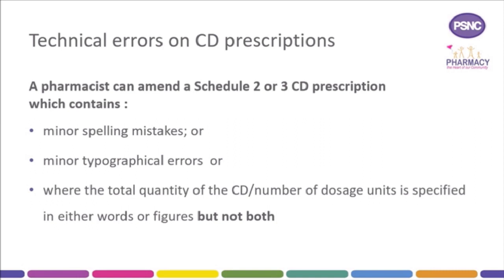If a Schedule 2 or 3 CD prescription issued by EPS does not comply with CD prescription requirements, the prescription must be referred back to the prescriber to be correctly written. Pharmacists cannot correct any other errors or omissions, for example missing date, incorrect dose, form or strength. These should be corrected by the original prescriber or, in an emergency, another prescriber authorised to prescribe CDs.